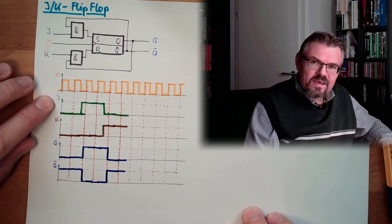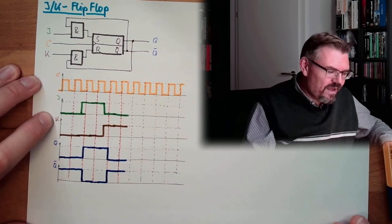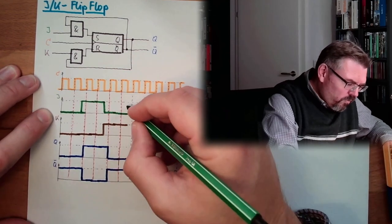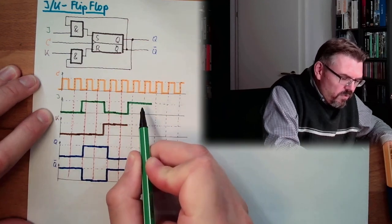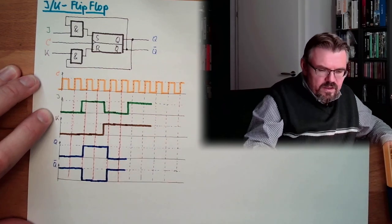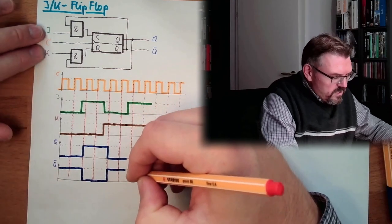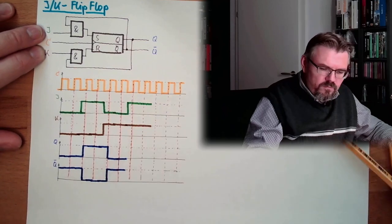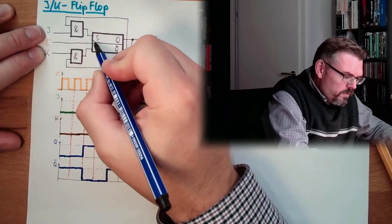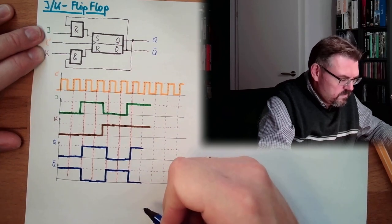So actually, J alone acts like an S and K alone acts like an R input. And we have also the possibility to turn on both. Let's see what is happening if we are turning on both. Here is a rising edge. J and K are one. Where we do have one, not Q. Here we have one. So we will do a set. We do a set.